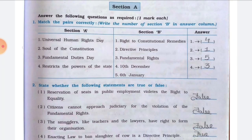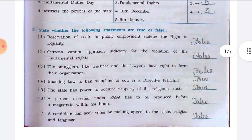Question number one: match the pairs correctly — write the number of Section B in the answer column. Number one, Universal Human Rights Day — the answer is 10th December. Number two, Soul of the Constitution — the answer is Right to Constitutional Remedies. Number three, Fundamental Duties Day — the answer is 6th January. Number four, restricts the power of the state — the answer is Fundamental Rights.